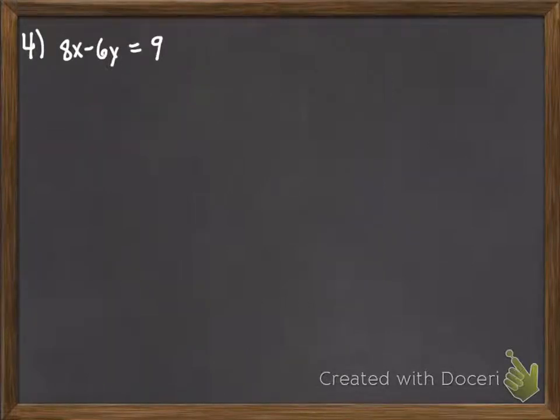And we have a fourth example. You're finding the slope when we have the equation of the line 8x minus 6y equals 9. So again, we want to solve that equation for y. I would encourage you to take a moment or two and try to do that before continuing on in the video.